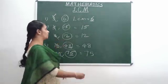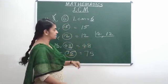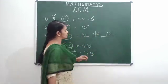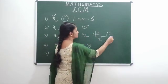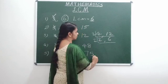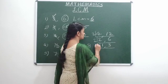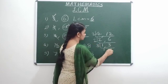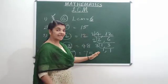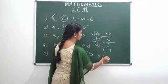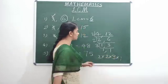Let's add 4 and 12. In the division method, we divide: 2 divided by 2 gives 4, 6, 2, 12. We add 2 divided by 1: 2 is 2, then 3, 2, 6. We add 3 divided by 1: 1 times 3 is 3. We add 1. LCM is 2, 2, 3, 1, 1.